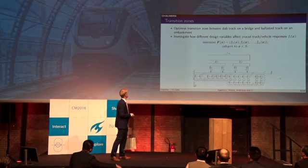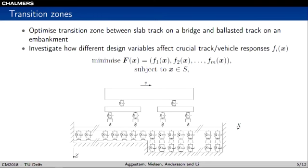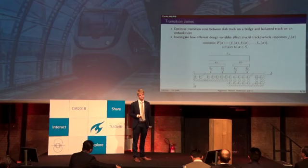We want to analyze a transition zone between a slab track on a bridge and a ballasted track on an embankment. We want to investigate how different design variables affect crucial track responses. Design variables can include, for example, the stiffness of the rail pads, the thickness of the road bed, dimensions of the sleepers, sleeper spacings, foundation conditions, and so on. There are many things that can be changed within a transition zone in order to improve its performance.